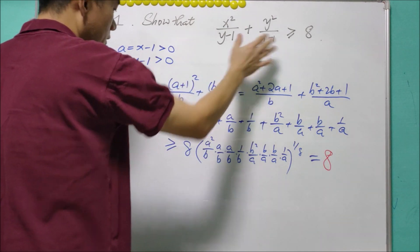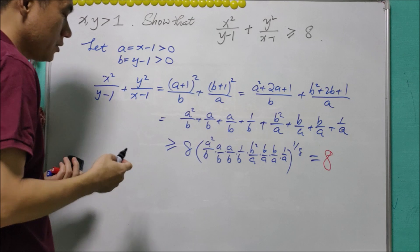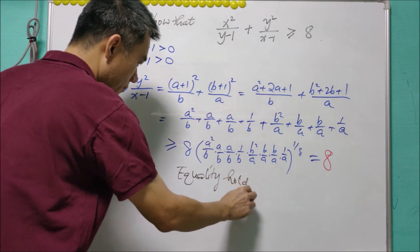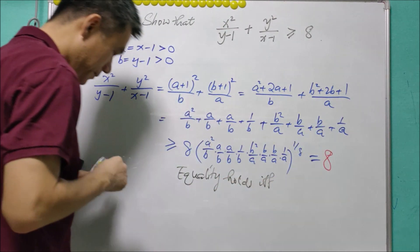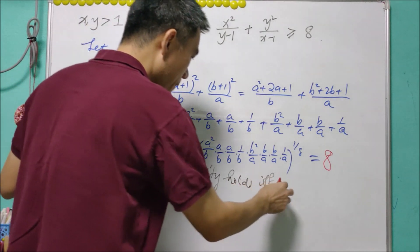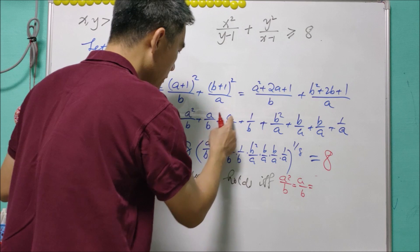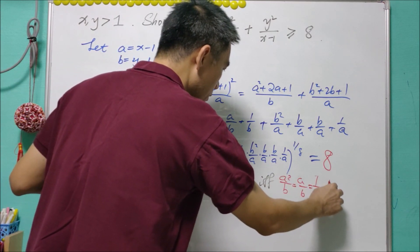Now we may ask: when does the equality hold? Equality holds if and only if each of the terms is the same, so each of the terms the same meaning that a²/b equals a/b, this is also a/b, equals 1/b, equals b²/a, b/a, and lastly 1/a.